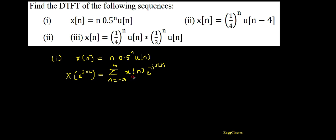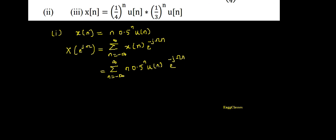In this case, summation n = -∞ to ∞, x[n] is given as n * 0.5^n * u[n], everything gets multiplied with e^(-jωn). Now I need to vary...